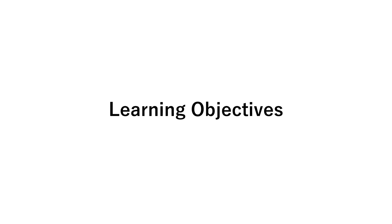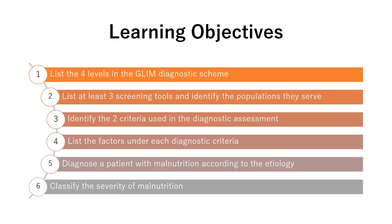The learning objectives for this presentation are: number one, list the four levels in the GLIM diagnostic scheme; number two, list at least three screening tools and identify the populations they serve; number three, identify the two criteria used in the diagnostic assessment; number four, list the factors under each diagnostic criteria; number five, diagnose a patient with malnutrition according to the etiology; and number six, classify the severity of malnutrition.